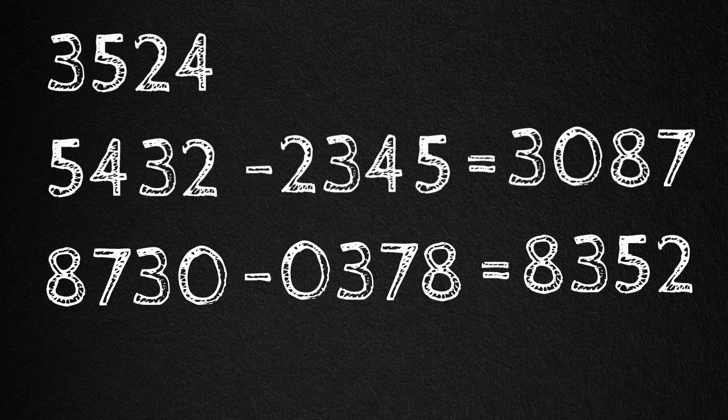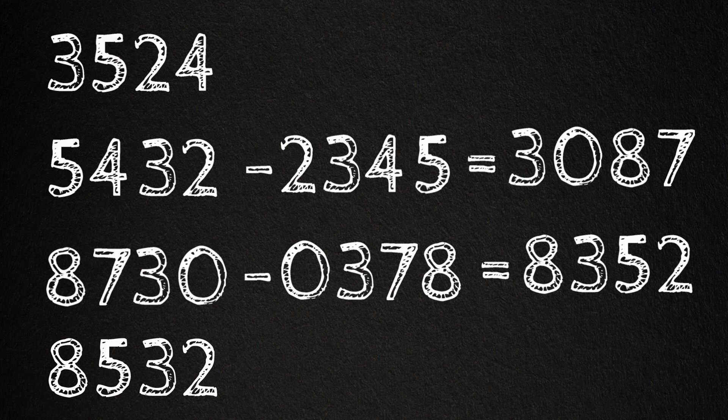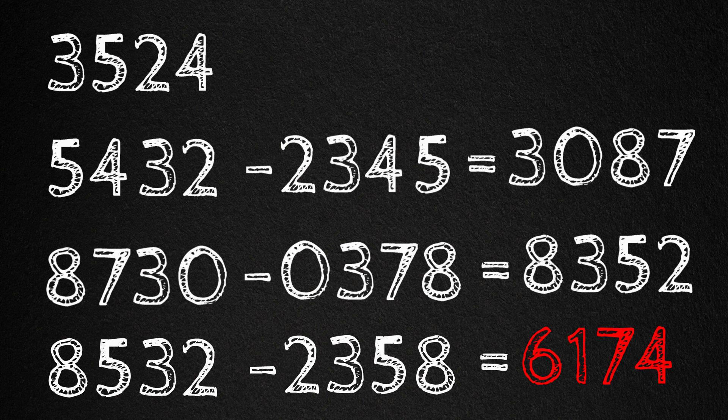And one more time, rearranging these digits in descending order. We have 8532. In ascending order, we have 2358. And then subtract. And we get 6174.